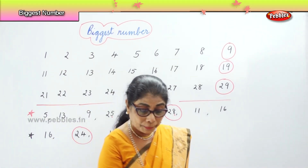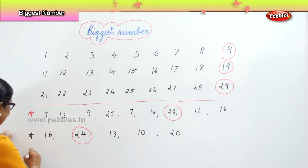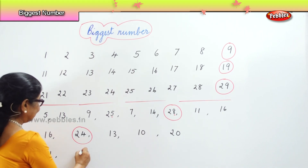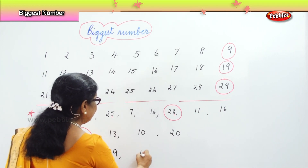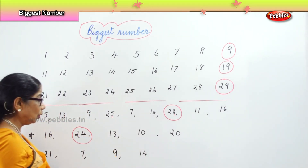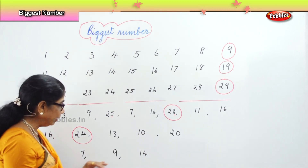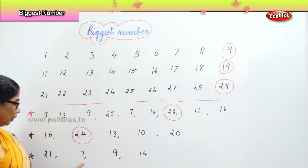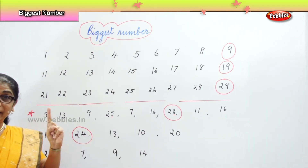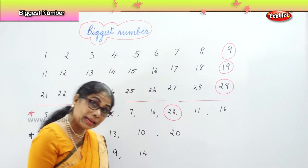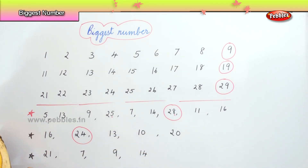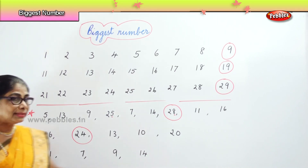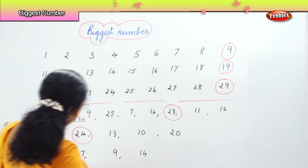I'll give you another mix-up of numbers — you tell me which is the biggest. Twenty-one, seven, nine, and fourteen. Here you have four numbers. Seven and nine are single digit. Fourteen has one in the first place, twenty-one has two in the first place. Which is the biggest number? Definitely twenty-one is the biggest number.